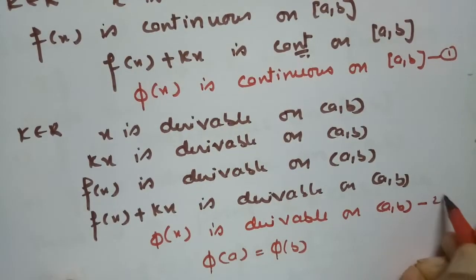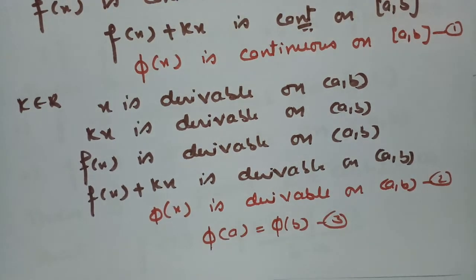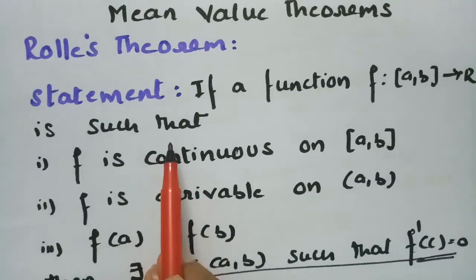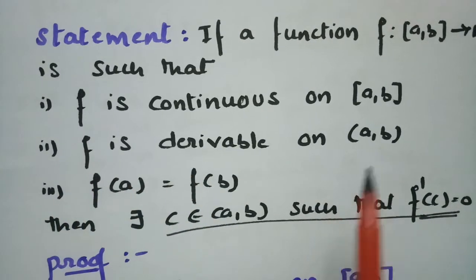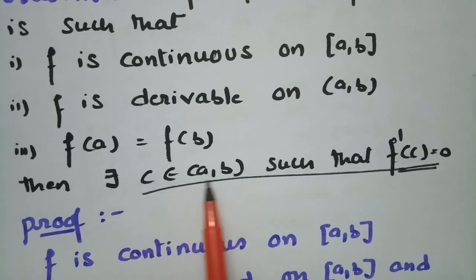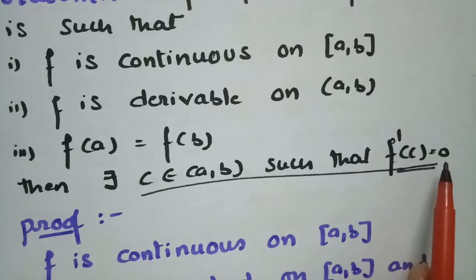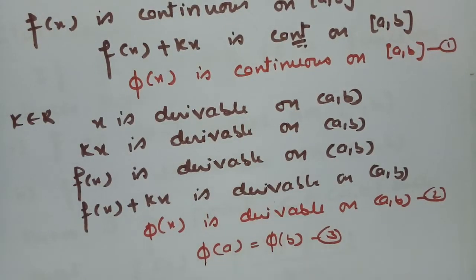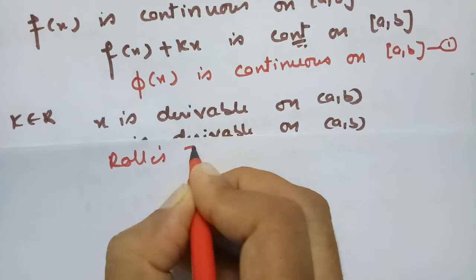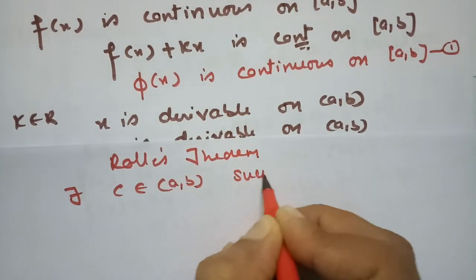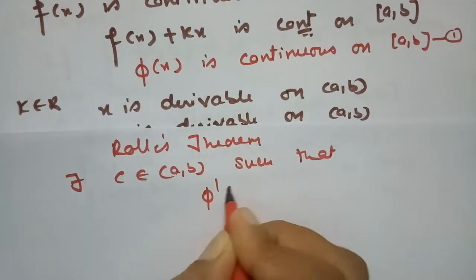This is the first equation, the second equation, and the third equation. According to these three conditions, we apply Rolle's theorem. Rolle's theorem states: if a function is continuous on closed [a, b], derivable on open (a, b), and f(a) = f(b), then there exists c belonging to open (a, b) such that f'(c) = 0. Applying Rolle's theorem to φ, since φ is continuous, derivable, and φ(a) = φ(b), there exists c in open (a, b) such that φ'(c) = 0.